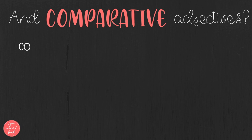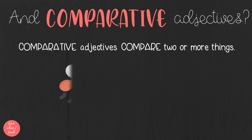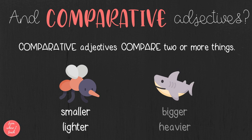Then what are comparative adjectives? Comparative adjectives compare two or more things. For example, a mosquito versus a shark — the mosquito is smaller and lighter, and the shark is bigger and heavier.